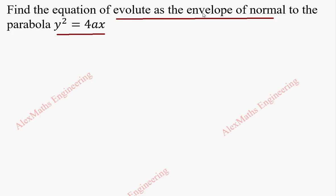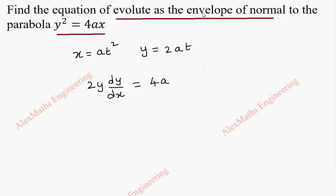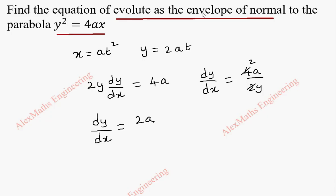The parametric form for this given parabola is x = at² and y = 2at. From this, we can get dy/dx by differentiating y² = 4ax. We get 2y·(dy/dx) = 4a, so dy/dx = 4a/2y. After cancelling, we get dy/dx = 2a/y.